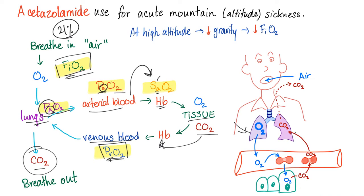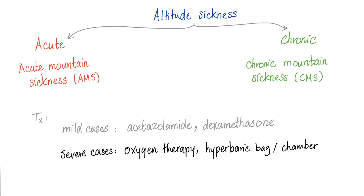Let's say you went on top of the mountain. Which one of these will be affected first? The answer is FiO2 — you will have less FiO2 because you're further away from the center of the earth. Less oxygen coming in means less P-big-AO2, less P-small-aO2, less SaO2 — because actions have consequences. Altitude sickness is divided into acute mountain sickness, AMS — not to be confused with acute mitral stenosis — and chronic mountain sickness, CMS, not to be confused with chronic myasthenic syndrome.